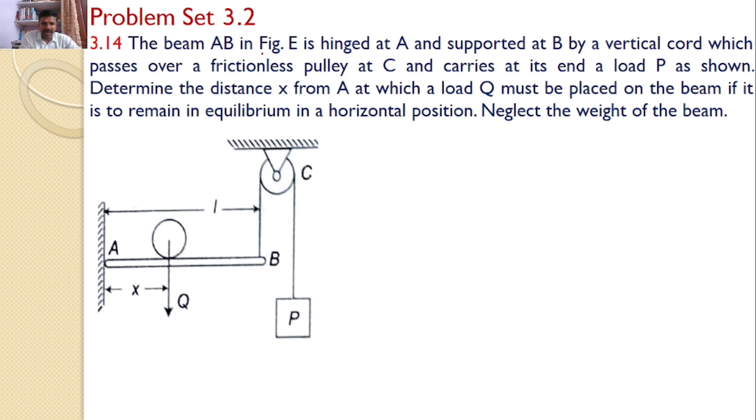The beam AB in figure E is hinged at A and supported at B by a vertical cord which passes over a frictionless pulley at C and carries at its end a load P as shown. Determine the distance X from A at which a load Q must be placed on the beam if it is to remain in equilibrium in a horizontal position. Neglect the weight of the beam.